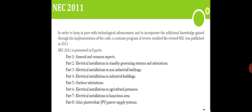In NEC 2011, in order to keep pace with technological advancements and to incorporate additional knowledge gained through implementation of the code, a continued program of review resulted in the revised NEC published in 2011. This NEC is presented in eight parts: Part 1 — General and common aspects including safety; Part 2 — Electrical installation in standby generating stations and substations; Part 3 — Electrical installation in non-industrial buildings; Part 4 — Electrical installation in industry; Part 5 — Outdoor substations; Part 6 — Electrical installation in agriculture premises; Part 7 — Electrical installation in hazardous areas; Part 8 — Solar photovoltaic power supply systems.